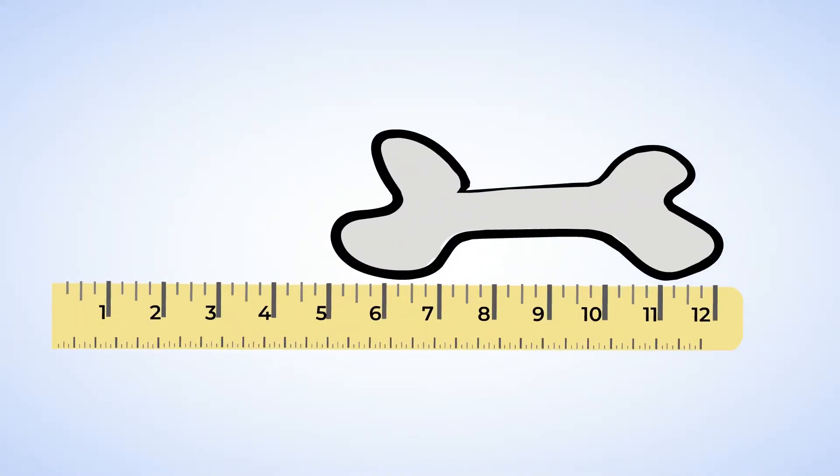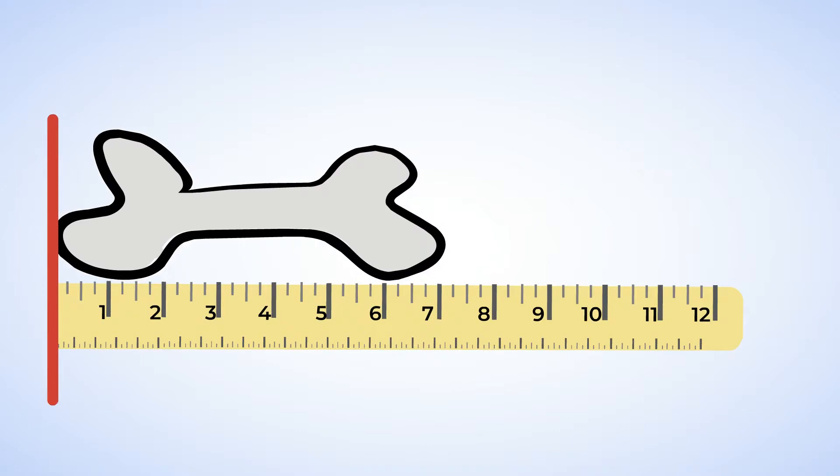And we saved the best for last. A dog bone that a pup dug up. Now this one isn't aligned. It starts at the 5 inch mark, so let's move it over and then we can measure it. Now that it's aligned, we can see that the dog bone is 7 inches long.